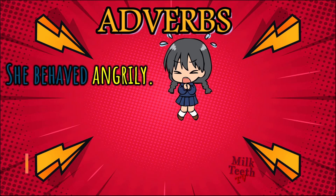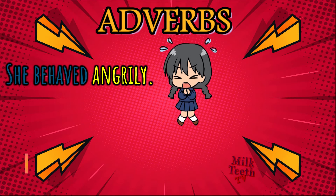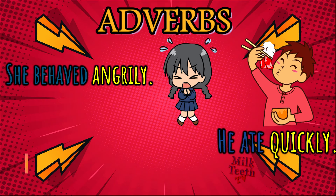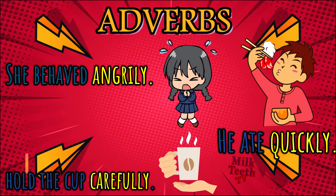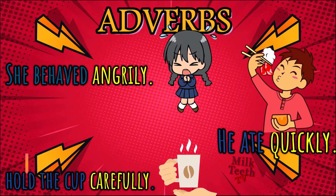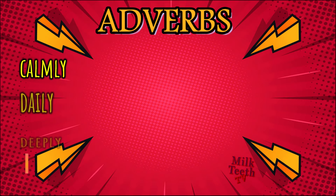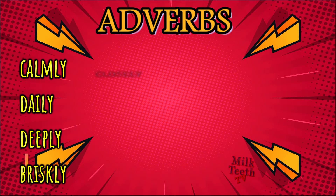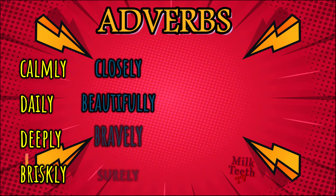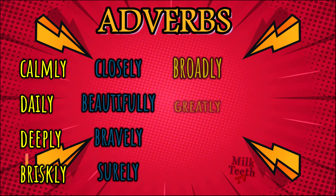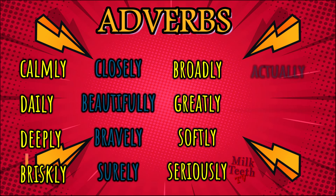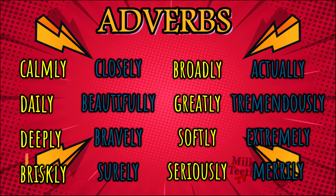She behaved angrily — 'angrily' is the adverb describing how she behaved. He ate quickly — 'quickly' is the adverb describing how he ate. Hold the cup carefully — 'carefully' is the adverb describing how we should hold the cup. Now read the list of adverbs: calmly, daily, deeply, briskly, closely, beautifully, bravely, surely, broadly, greatly, softly, seriously, actually, tremendously, extremely, merrily. These are some easy-to-identify adverbs. Now let us understand the different types of adverbs.